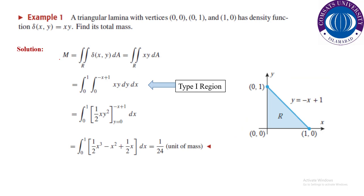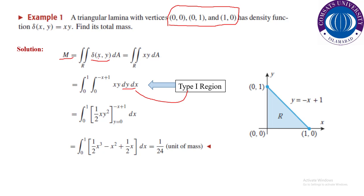Initial example related to the concept of mass: a triangular lamina with vertices (0,0), (0,1), and (1,0) has density function δ(x, y), and we need to find its total mass. This is the geometry of the lamina — a very simple triangular shape representing three points. You can construct an integral of type 1 or type 2; it is all your choice.